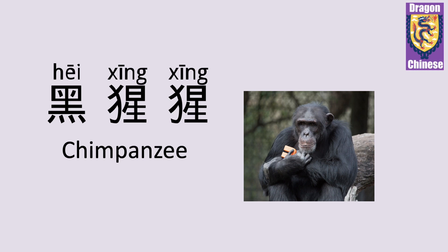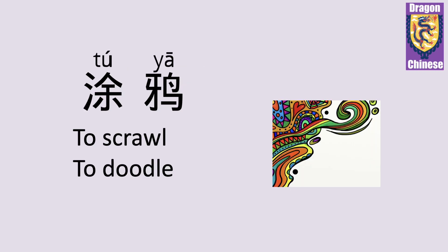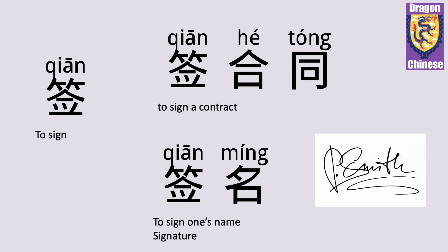黑猩猩 — chimpanzee. 黑猩猩. 图丫 — to doodle, to scrawl. 图丫. 签 — to sign. For example, 签合同 — to sign a contract. 签合同.